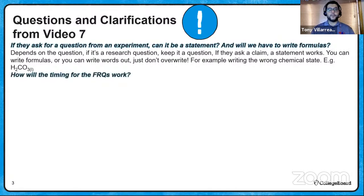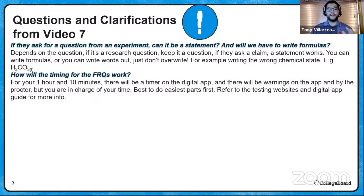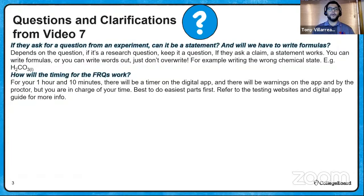How will timing for FRQs work? You get an hour and 10 minutes. The digital app will have a timer and will alert you when there are five minutes left — make sure to download and try the app. If you're testing in person, a proctor typically gives a 10-minute warning. Always do the easiest parts first to give yourself more time at the end, and refer to the testing websites and digital app for more information.